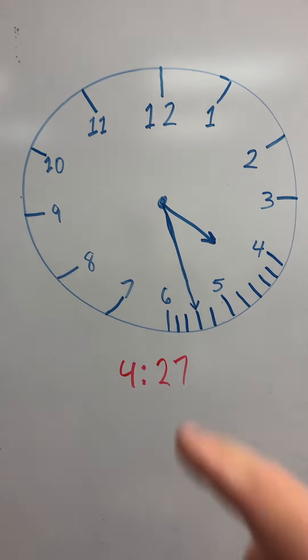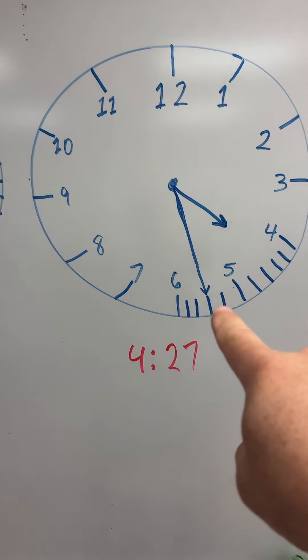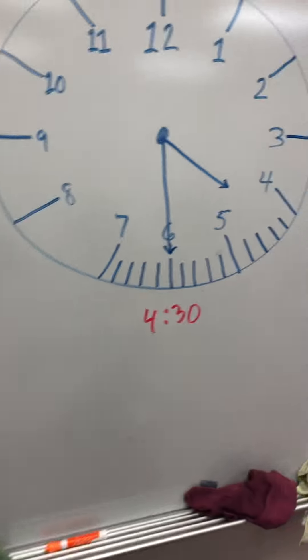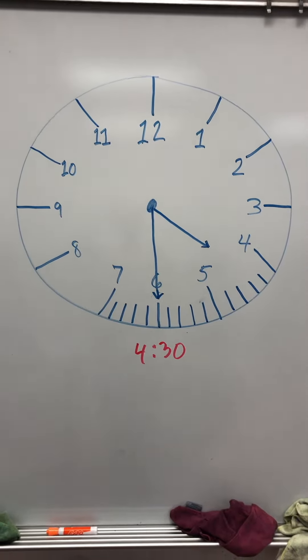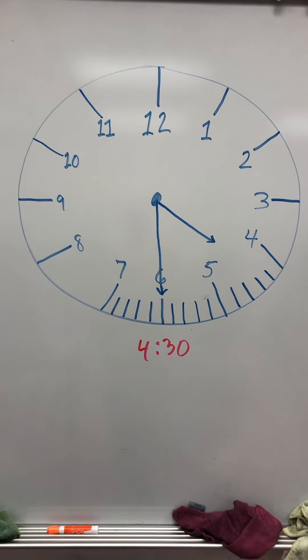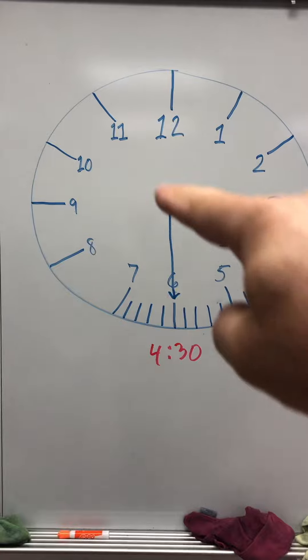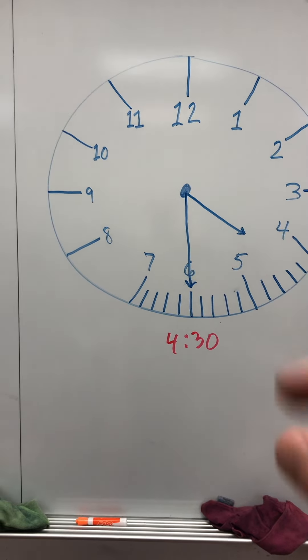So here, if this would be 25, then this is 26 and 27. This is 4:27. Exactly halfway is going to be 4:30. Some people would say half past four. And here, the hour hand is exactly halfway between four and five.